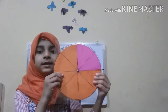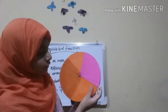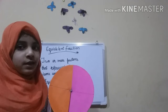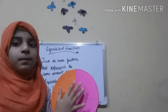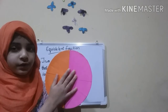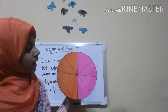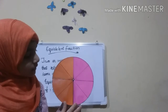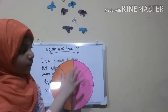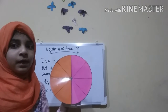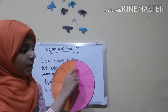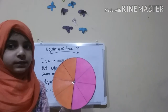Now let me show you another equivalent fraction example. Let me rotate the fraction wheel. The pink portion is now half. So the amount of parts represented is also half. I will again take the transparent sheet and put it on this fraction wheel. After putting the transparent sheet, the amount of parts represented has not changed. If I remove the transparent sheet, it remains the same. So 1 by 2 is equivalent to 4 by 8.